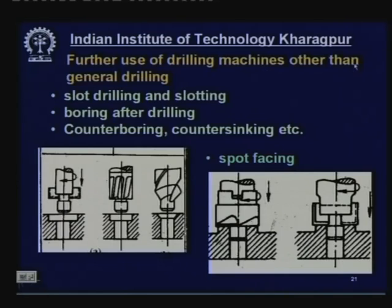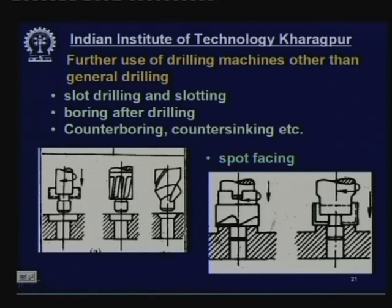Further uses of drilling machines beyond general drilling include: slot drilling and slotting; boring — enlargement of a hole by putting a boring tool in the drill spindle instead of a drill; counter boring — enlarging the diameter at the top end of a hole to accommodate a bolt head or nut; counter sinking — a tapered enlargement to accept a screw; and spot facing — flattening the surface at the top of a hole.